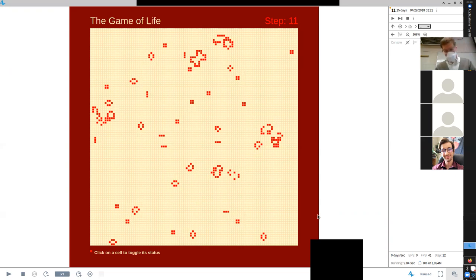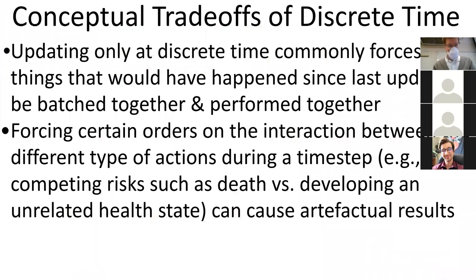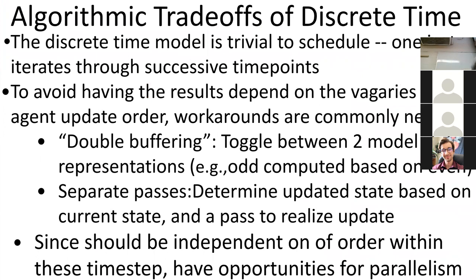Researchers in agent-based modeling came to deal with this issue. One approach is called double buffering, where you have two versions of the state — one at odd times and one at even times. When updating the even one you only depend on the odd buffer for neighbor counts, so you're updating things in the even buffer. Because the only updates occur in the even buffer and all you're depending on is the odd buffer, you don't have to worry about the dependency.